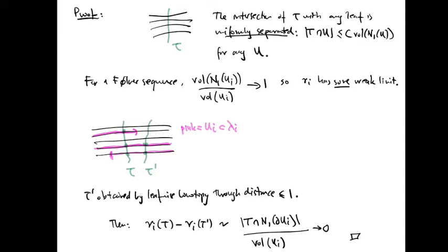Now, for any Følner sequence U_i, the volume of a neighborhood of U_i is comparable to the volume of U_i in that the ratio goes to one. Therefore, the value of nu_i on any transversal tau is uniformly bounded, and the nu_i has some weak limit which we call nu.